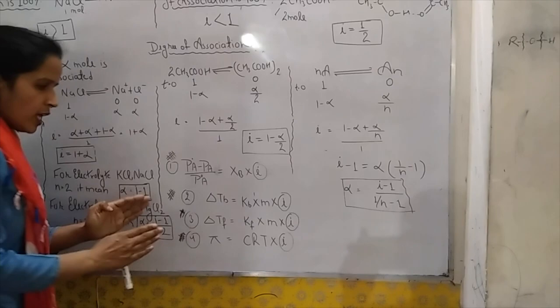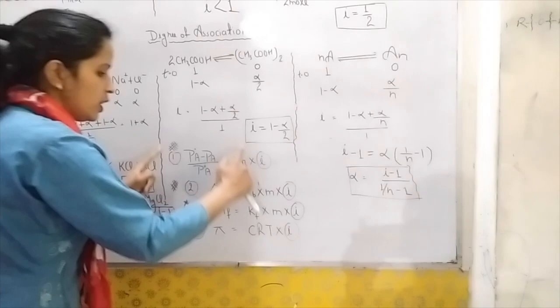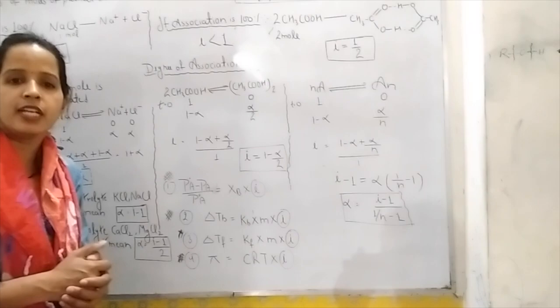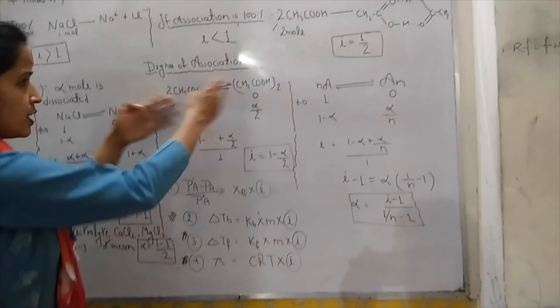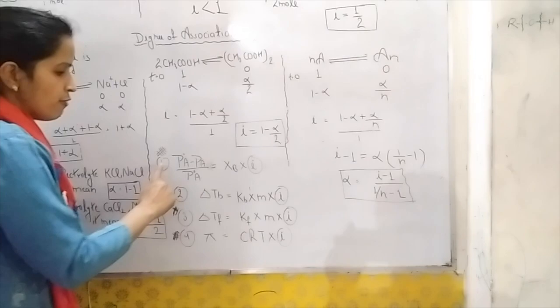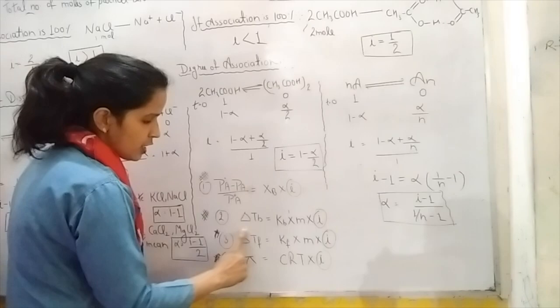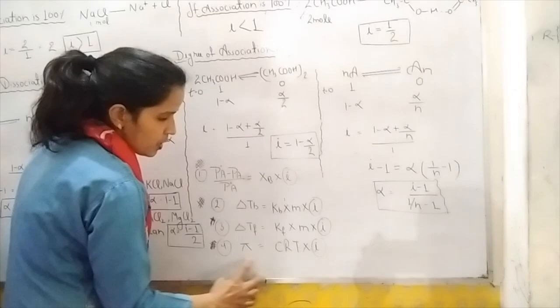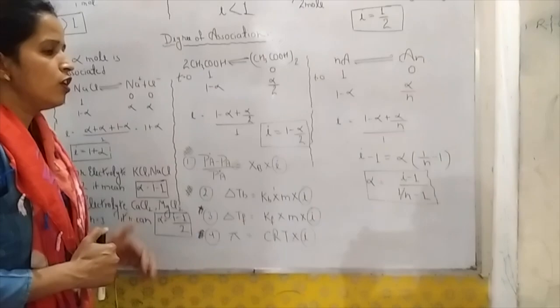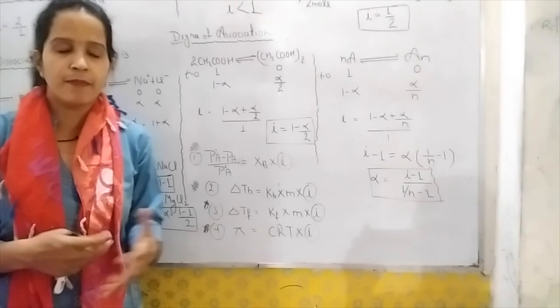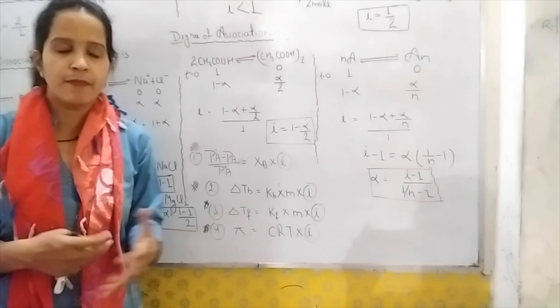As I told you previously, these colligative property formulas are used when a substance does not associate or dissociate. But if we take NaCl, KCl, or acetic acid — which dissociate or associate — to correct the molar mass we multiply 'i' into all the colligative properties: relative lowering of vapor pressure, elevation in boiling point, depression in freezing point, and osmotic pressure. So for electrolytes, we use these four modified formulas.